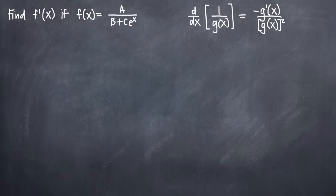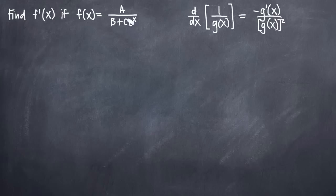In this particular problem, we've been asked to find f prime of x, which is the first derivative of our function f of x, given that f of x is equal to a divided by b plus c times e to the x.